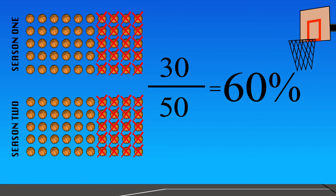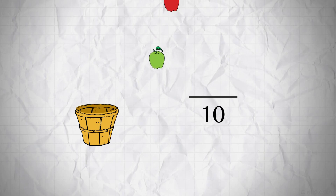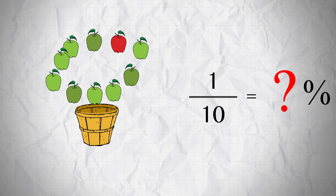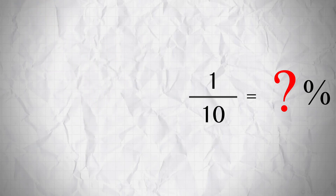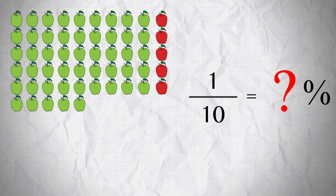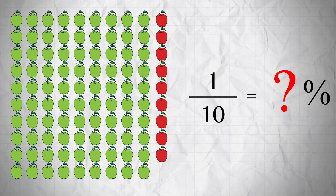Here's a visual. What if there are 10 apples in a basket and one of them is red? What percent of the apples are red? Here's 1 out of 10, repeated over and over — you can see 1 out of 10 is 10%, because 10 out of 100. If you kept doing 1 out of 10, you'd get 10 out of 100.